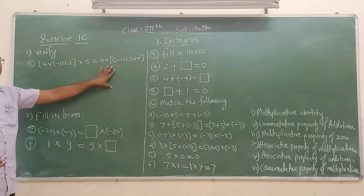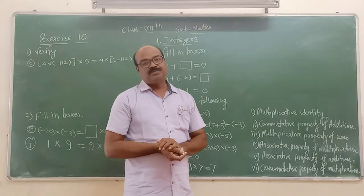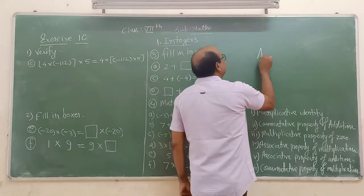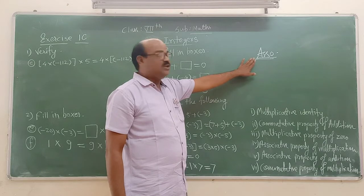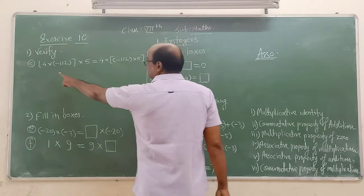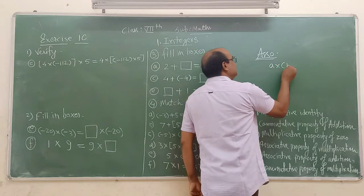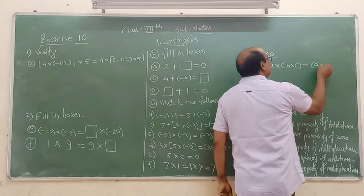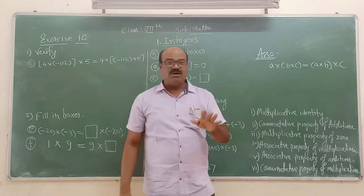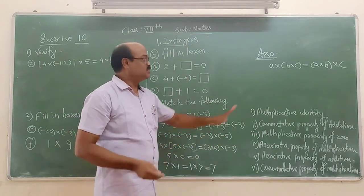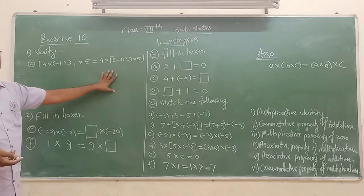After observing the problem carefully, we come to know there are three quantities, three integers. So students, first thing — we should identify this as the associative property. And of course, you can see here the multiplication sign. Students, we have seen this property where grouping doesn't affect the final result of the product. So students, we have to prove and verify this for the specific question.